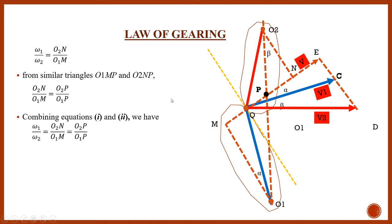Now consider the similar triangles O1MP and O2NP. Using the similar triangle principle: O2N upon O1M equals O2P upon O1P.